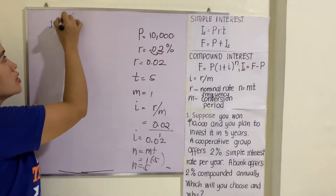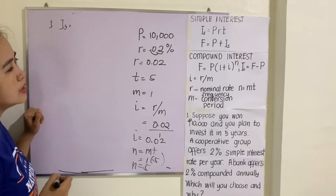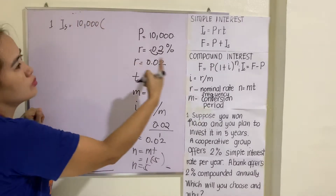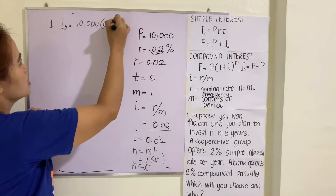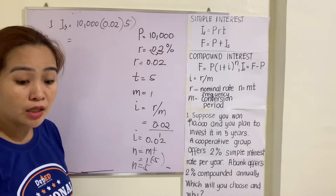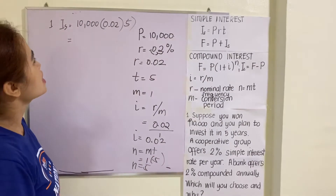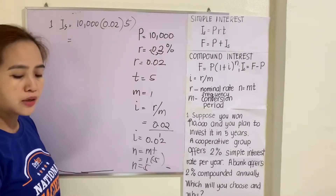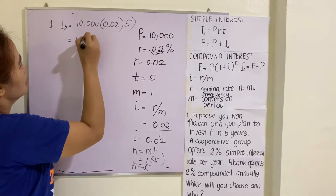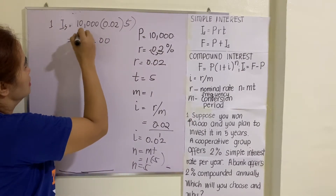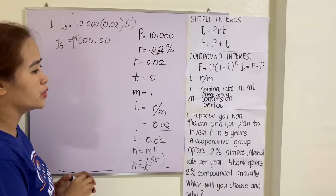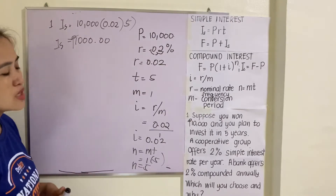Let's illustrate simple interest first. The formula is P times R times T, so that is ten thousand times 0.02 times five. Using a scientific calculator, you multiply ten thousand by 0.02 by five, and you get one thousand. So the interest earned from the cooperative will be one thousand pesos.